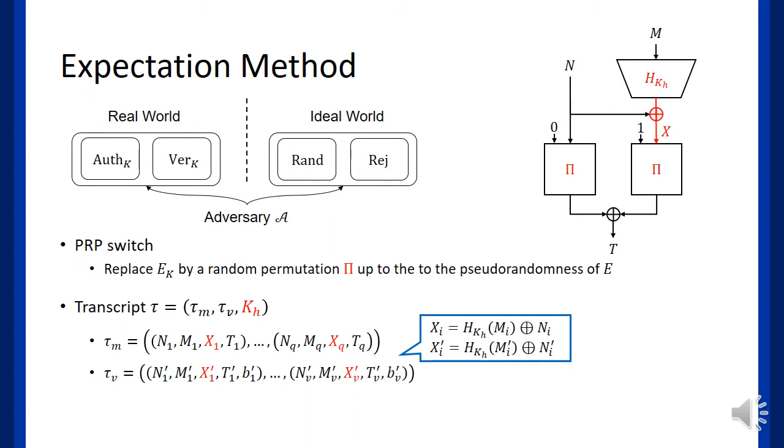Let's introduce the brief overview of our security proof. At first, we replace the block cipher E_K by a random permutation pi. And this adds negligible advantage up to the pseudo-randomness of the block cipher. Next, we assume that the hash key K_h is revealed to the adversary at the end of the interaction.